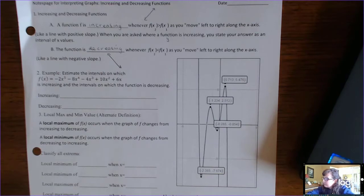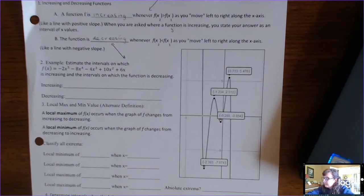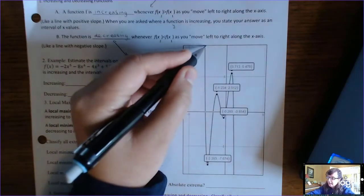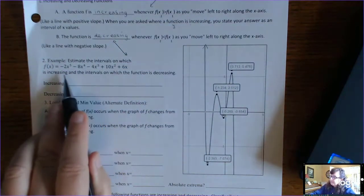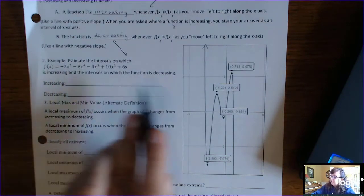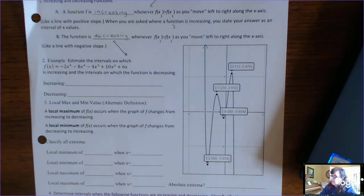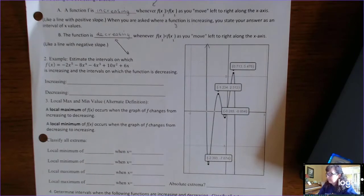Example 2: estimate the intervals on which f of x equals negative 2x to the fifth minus 8x to the fourth minus 4x cubed plus 10x squared plus 6x is increasing, and the intervals on which the function is decreasing. This is a fifth-degree function with a lot of local mins and local maxes, which gives us many places where the function is increasing and decreasing.